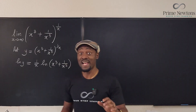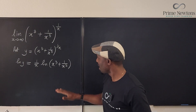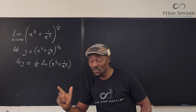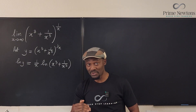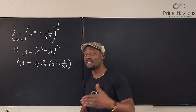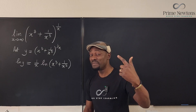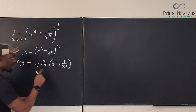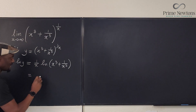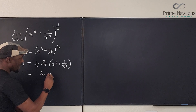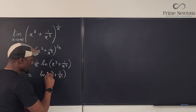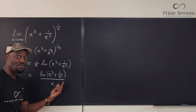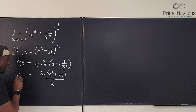I'm not taking the limit yet. I want to see what I have first. The mission is to use L'Hôpital's rule, and for that you need a rational function such that when you take the limit you get 0 over 0 or infinity over infinity. I found my setup: I can write the right-hand side as the natural log of x cubed plus 1 over x cubed, all divided by x. Now I have a rational function, and this equals the natural log of y.